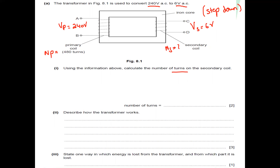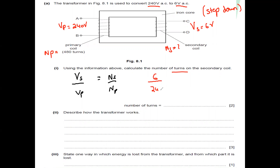To find the number of turns of the secondary, use the formula: VS over VP equals NS over NP. This is the transformer formula — the voltage of the secondary divided by the voltage of the primary equals the number of turns of the secondary divided by the number of turns of the primary. So voltage of the secondary is 6, voltage of the primary is 240, and number of turns of the primary is 480.